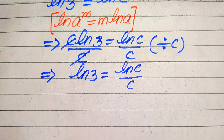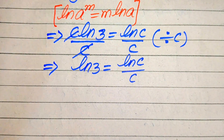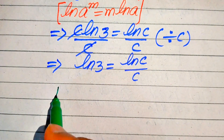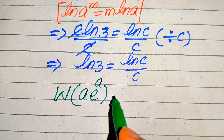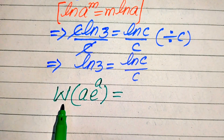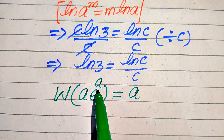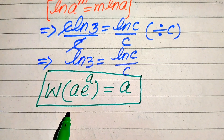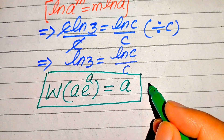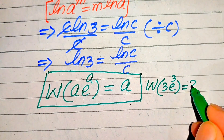In the next step we solve this problem with the help of the Lambert W function. The Lambert W function is defined as: W of (a times e to the power of a) equals a. In other words, when we apply the Lambert W function to a term of that form, the output is the exponent a only. For example, W of (3 times e to the power of 3) equals 3.